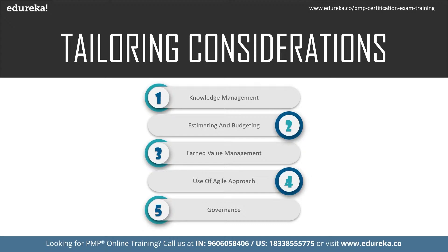Using an agile approach means depending on what kind of approach is required for the project scenario — agile is not necessarily applicable to all projects. Governance is about authority — one which sets directions — and it is essential to have such directions set so that necessary controls are established through policies, procedures and guidelines.